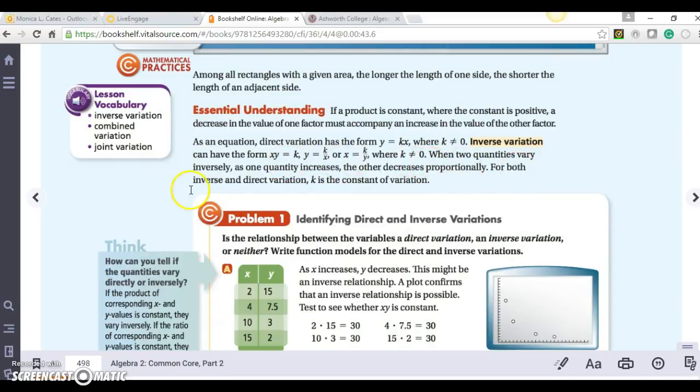When two quantities vary inversely, as one quantity increases, the other decreases proportionally. For both inverse and direct variation, k is a constant of variation. So this product that they're referring to is this product here, xy. As my x value increases, my y value decreases, or vice versa.